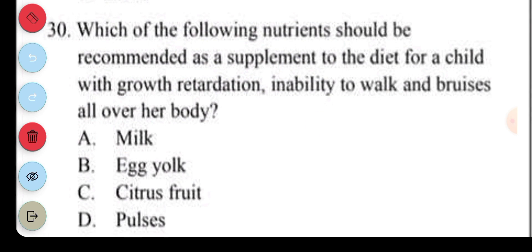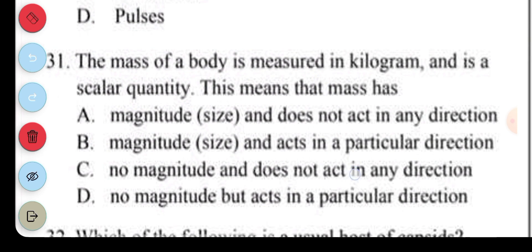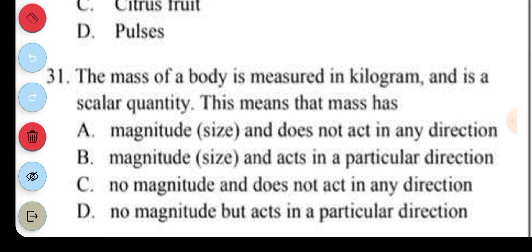Question 30. Which of the following nutrients should be recommended as a supplement to the diet of a child with growth retardation, inability to walk, and bruises all over her body? I think there's an issue with the options. Question 31. The mass of a body is measured in kilograms and it's a scalar quantity. This means that mass has: A. Magnitude or size and does not act in any direction. B. Magnitude or size and acts in a particular direction. C. No magnitude and does not act in any direction. D. No magnitude but acts in a particular direction. The answer to question 31 is A, mass has magnitude and does not act in any direction.